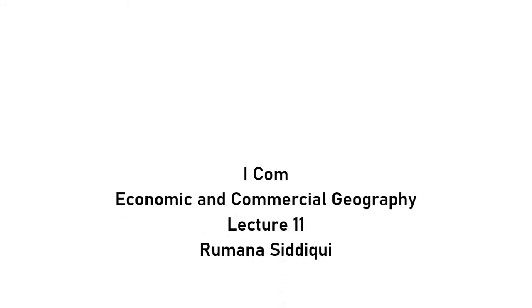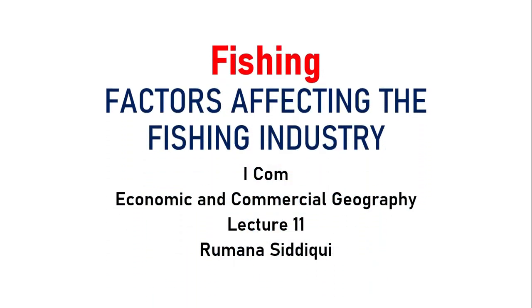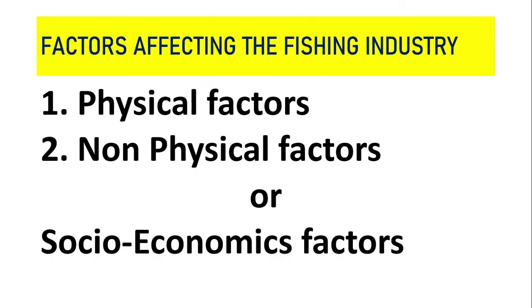My name is Rahman Rahim. Today our topic is factors affecting the fishing industry. There are two types of factors which affect the fishing industry: physical factors and non-physical factors. Non-physical factors are also known as socio-economic factors.